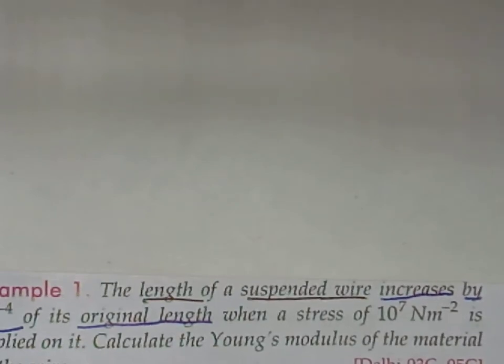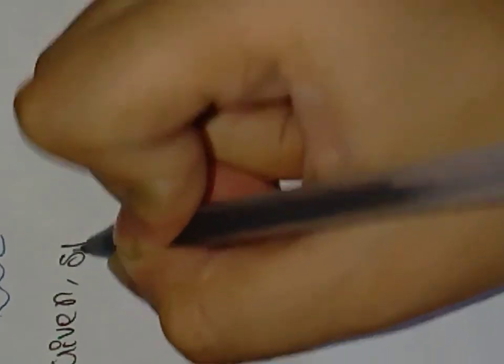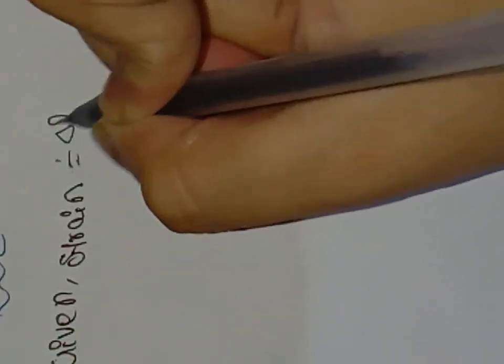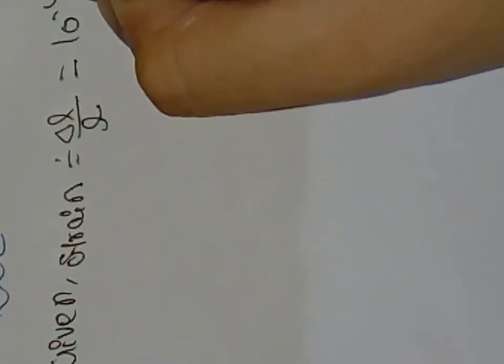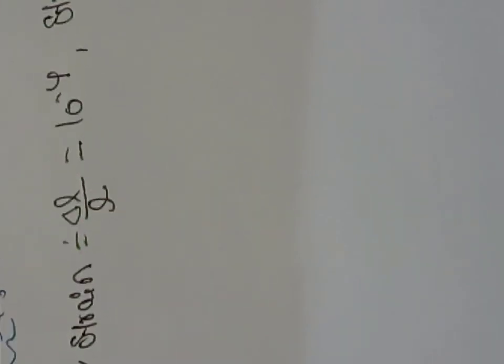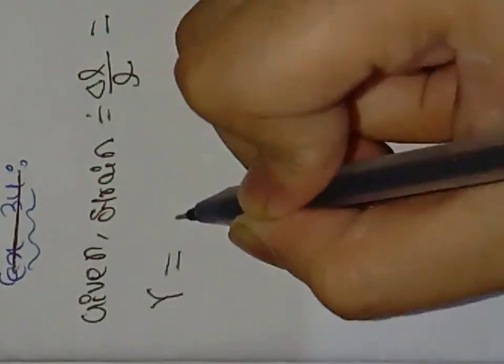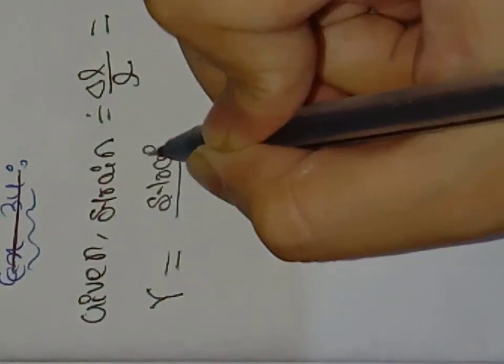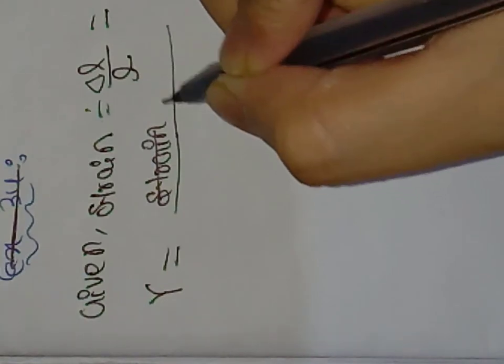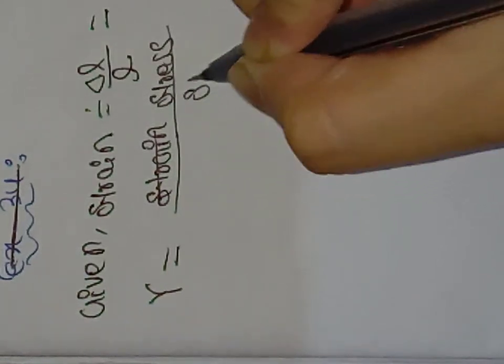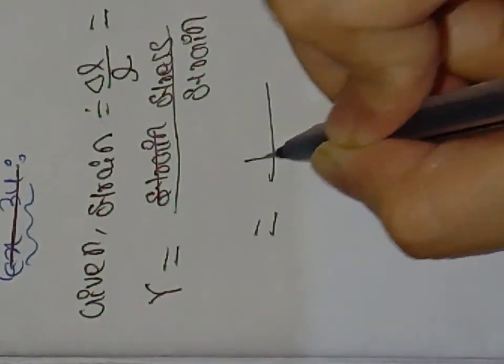To find the Young's modulus, we apply the formula. Given: strain, that is delta L by L, is 10 to the power minus 4, and stress is 10 to the power seven Newton per meter square. The formula for Young's modulus is stress divided by strain.